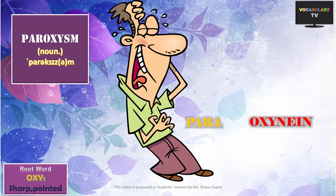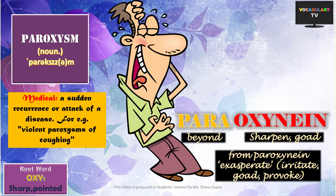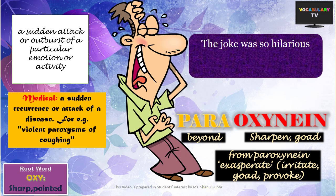Our last word is PAROXYSM. Its literal meaning is 'beyond sharpen or goad,' and if one gets goaded or irritated too much, one can expect a sudden outburst — which is what this word means. In medical terminology, paroxysm stands for a sudden attack or increase of symptoms of a disease such as pain, coughing, or shaking that often recurs. More broadly, paroxysm can describe any sudden outburst of a particular emotion or activity — such as a paroxysm of rage, or: 'The joke was so hilarious that he burst into a paroxysm of laughter.'